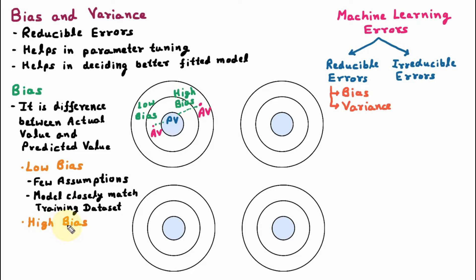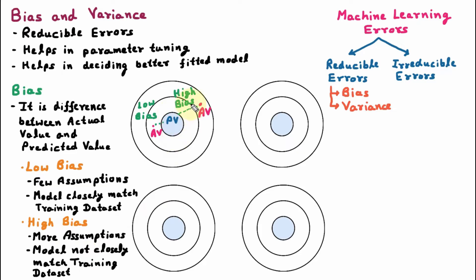In high bias, we take more assumptions, which is why the difference between predicted and actual value is high. In high bias, the model does not closely match the training dataset, and the difference between predicted and actual value is very high. That's why the model is not close to the training dataset. In high bias, there is a high error rate — there is a huge difference between what we predicted and what is actual, so many errors will come.